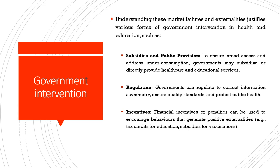Understanding these market failures and externalities justifies various forms of government intervention particularly in health and education. By three modes: first, subsidies and public provision — to ensure broad access and address under-consumption, governments may subsidize or directly provide healthcare and educational services. Second, regulation — governments can regulate to correct information asymmetry, ensure quality standards, and protect public health. Third, incentives — financial incentives or penalties that encourage behaviors generating positive externalities, for example tax credits for education and subsidies for vaccinations.